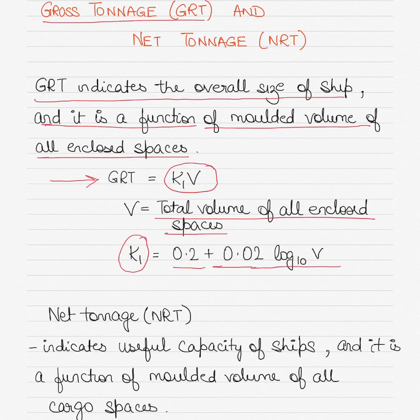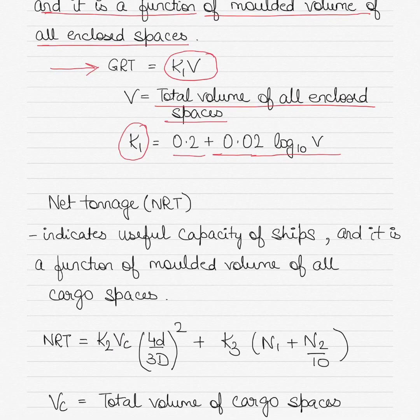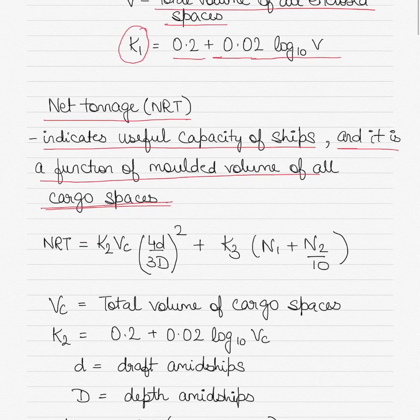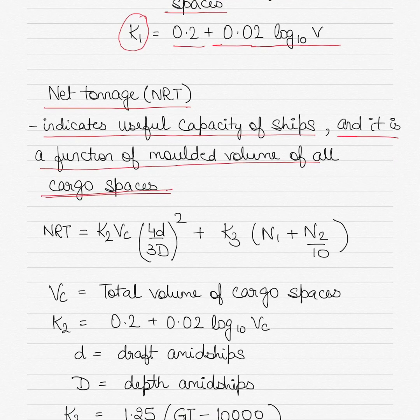Then I'll move on to the concept of net tonnage or NRT. The net tonnage indicates useful capacity of the ships. It is actually a function of all molded volume of cargo spaces. So if you are sitting on cargo ships, think about all the spaces in which you can carry cargo, think about its volume, and if you add up the volumes of those spaces, that is an indication of net tonnage of a vessel.